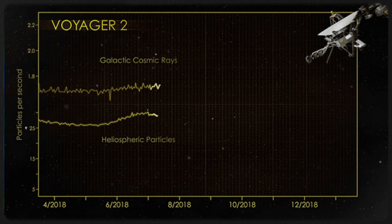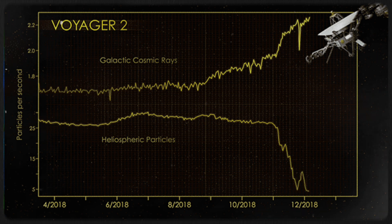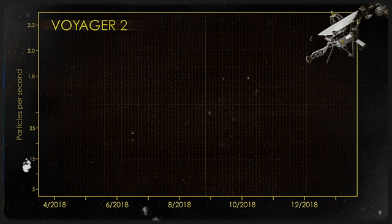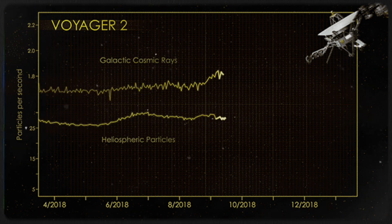Despite the faintness, these signals have significantly altered what astronomers anticipated discovering as the Voyagers enter the interstellar phase of their journey.